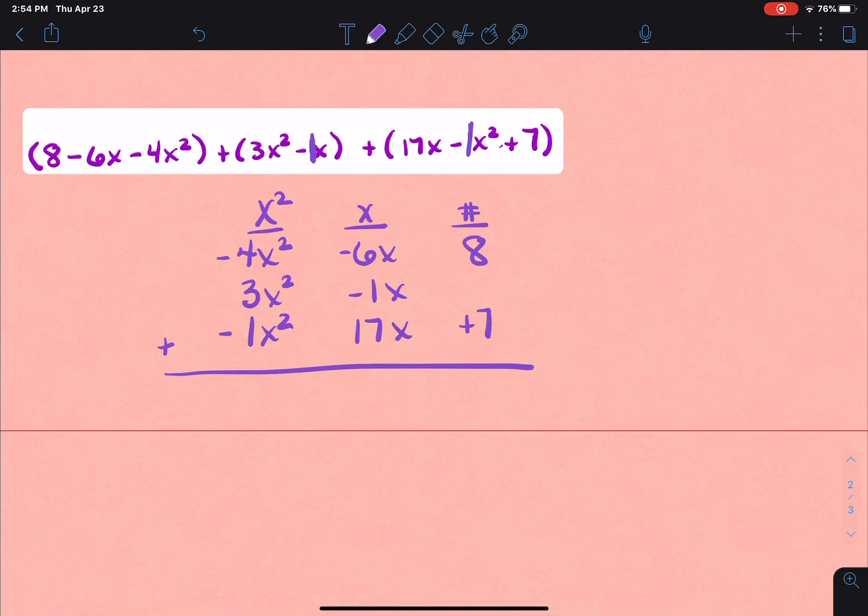So now if I'm going to total, I know this whole column is all about x². So negative 4 plus 3 is negative 1, plus a negative 1 is negative 2. Now in this column I know they're all x's. So negative 6 plus negative 1 is negative 7, plus 17 is positive 10. And then for this last column, positive 15.